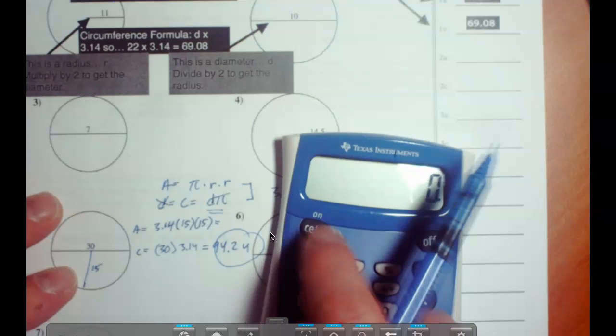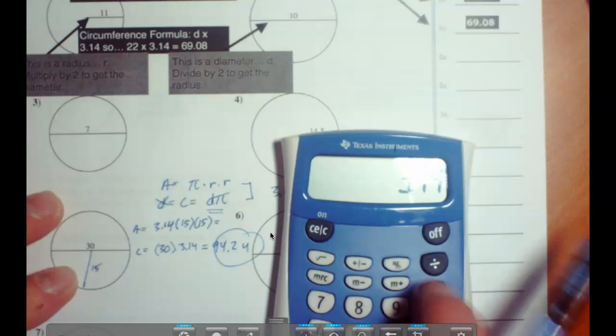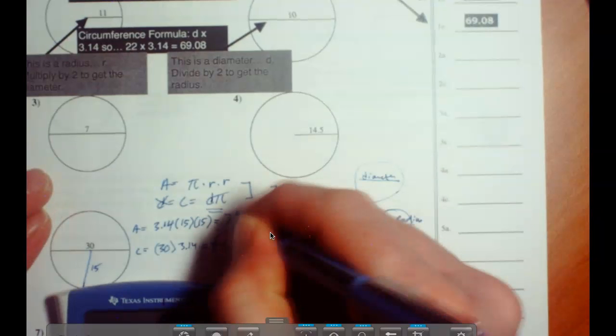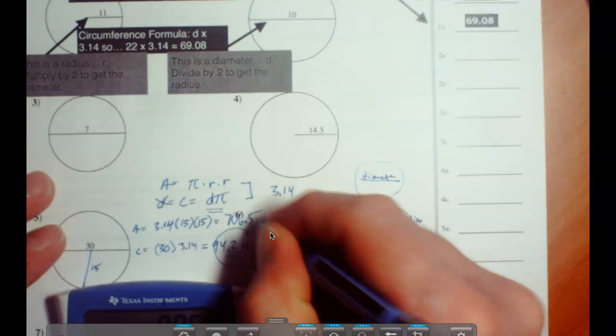It's like a sailor or like a pirate, pi r r. 3.14 times 15 times 15 equals 706.5. And that's going to be units squared.